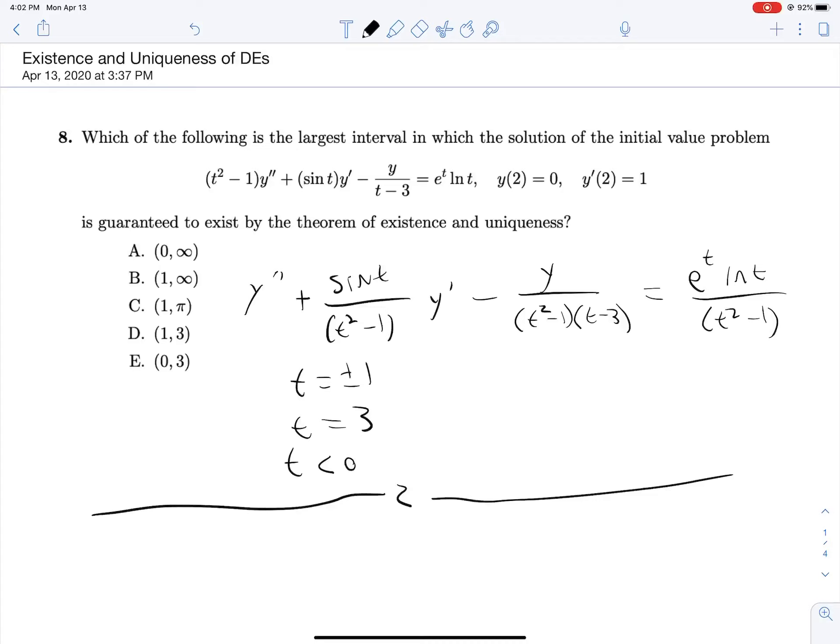So because our solution curve definitely is defined for y of 2, we can see that if we go in the left direction, we are going to hit our t equals 1 discontinuity first. And if we go in the other direction, we will hit t equals 3. So we can only guarantee that a solution exists between 1 and 3.